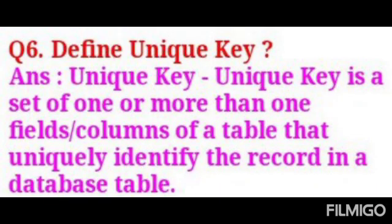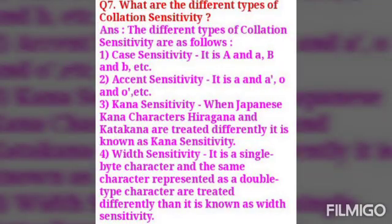The next question is: define unique key. A unique key is a set of one or more fields or columns of a table that uniquely identify a record in a database table.